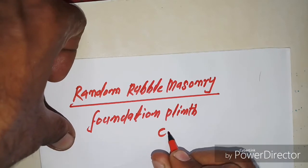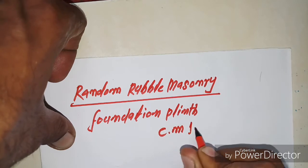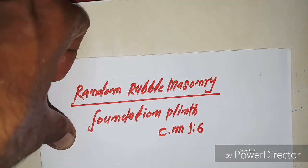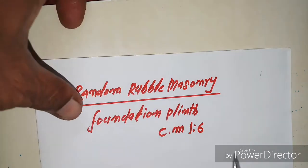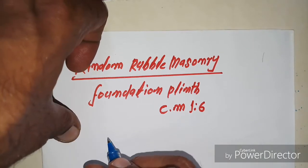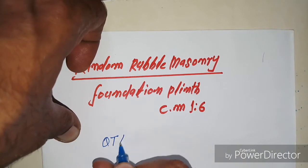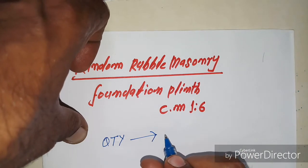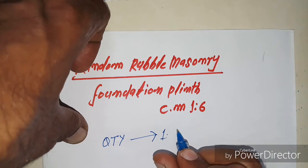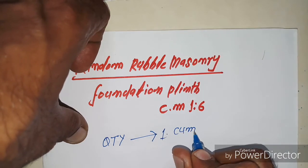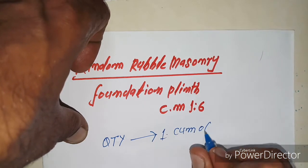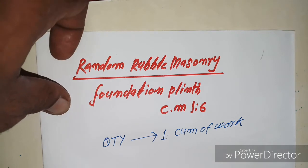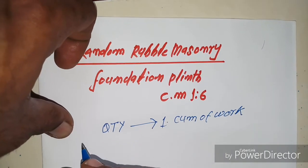इसका ratio है 1:6। अब हम यह आपको दे देते हैं — quantity: one cubic meter of work।